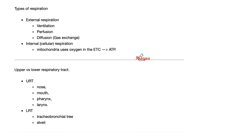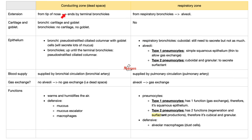The respiratory tract can be divided into upper and lower. Upper includes nose or mouth, pharynx, and larynx. Lower includes the tracheobronchial tree: trachea, bronchi, bronchioles, and alveoli. There is also a functional classification: conducting zone versus respiratory zone. The conducting zone starts at the tip of your nose and ends at the terminal bronchioles. The conducting zone has mucus, an escalator to get debris out, macrophages, IgA, and lysozymes for foreign invaders — but there is no gas exchange.